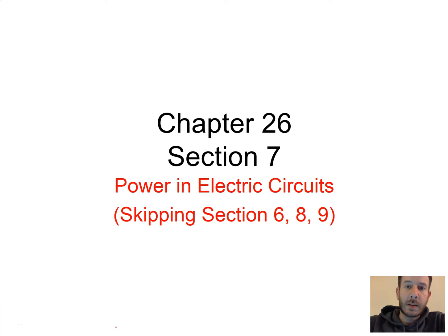We're going to finish up chapter 26 with a pretty quick lecture. We're just going to look at power and electric circuits. We're skipping sections 6, 8, and 9 as they're not covered on the AP test. Section 6 is talking about a macroscopic view of Ohm's law. Sections 8 and 9 are talking about superconductors and semiconductors, but it's a little bit beyond the scope of the course.